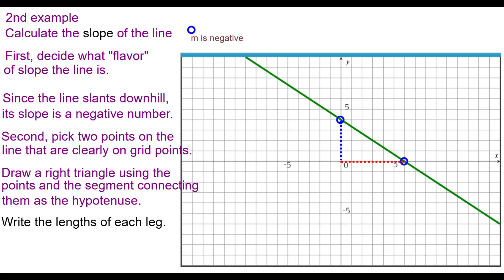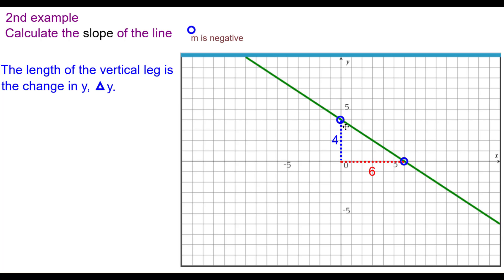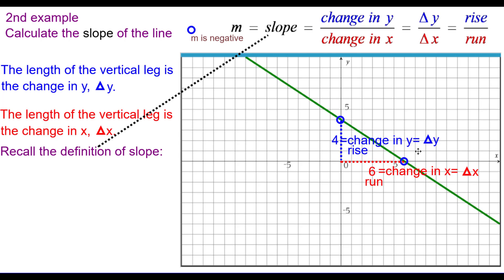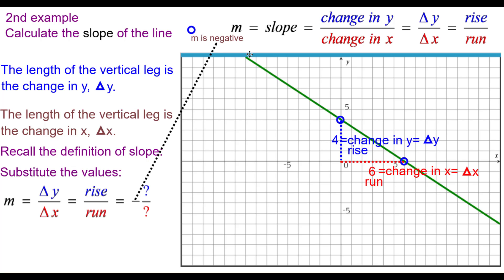Write the lengths of each leg: this is 4 units here and 6 units here. The length of the vertical leg is the change in y — delta y — also called the rise. The length of the horizontal leg, 6, is called the change in x — delta x — sometimes called the run. Using the definition of slope, change in y over change in x, rise over run, we substitute: the slope is negative, and the rise over run is 4 over 6. Simplifying, the slope of this line is negative two-thirds.